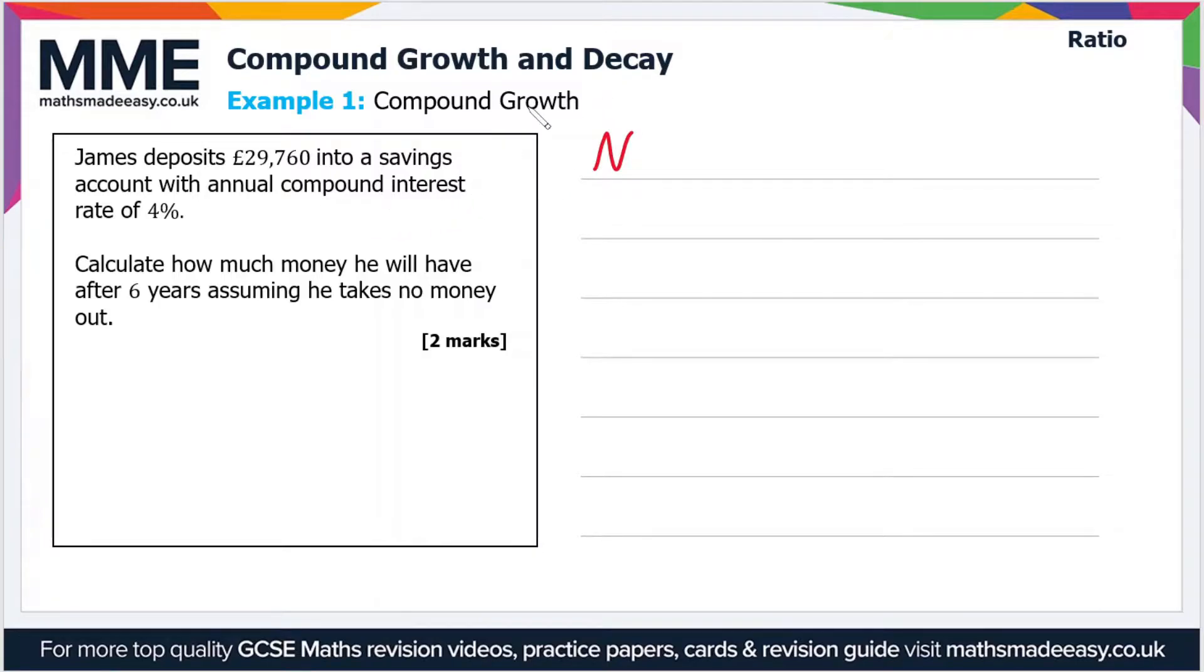Okay, let's just write out the compound growth formula. Compound growth this time because we're dealing with compound interest. So N, the amount after the time period, is N₀, the original amount, times 1 plus the percentage change divided by 100 to the power of n, where n is the number of time periods.